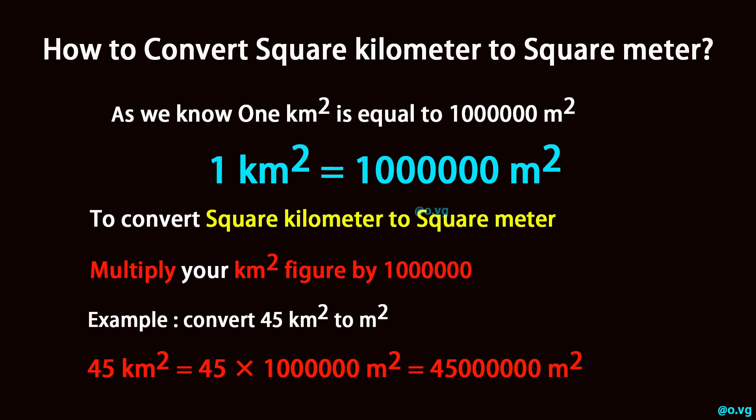Example: convert 45 square kilometers to square meters. 45 square kilometers equals 45 times one million square meters, which equals 45 million square meters.